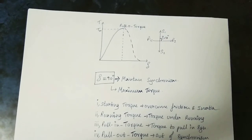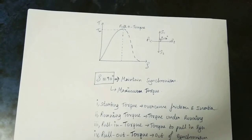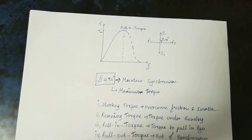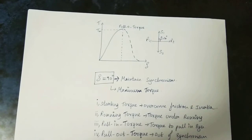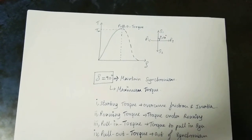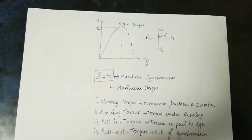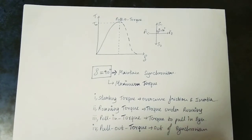The maximum torque point is called the pull-out torque. Beyond this point the motor loses synchronism. There are four types of torque: starting torque, running torque, pull-in torque, and pull-out torque.